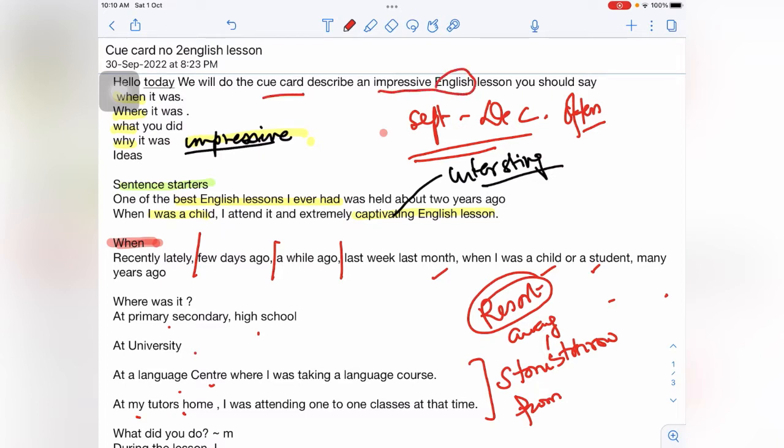An impressive English lesson. Please understand the main question. It is about an English lesson and not any other lesson, so be careful about this. You have to be careful what is being asked. So when, where it was and what did you do, and why it was impressive or what do you feel it was different.